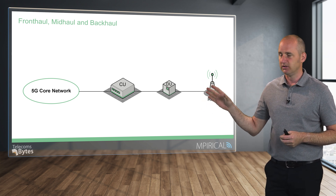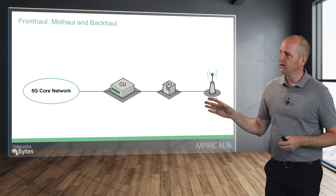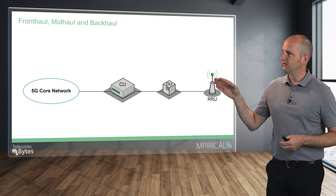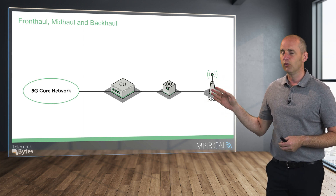You can see those elements on the screen. It's the centralised unit, the distributed unit and the remote radio unit. Collectively, all three of those will perform the job of a 5G gNB or a 4G eNodeB.